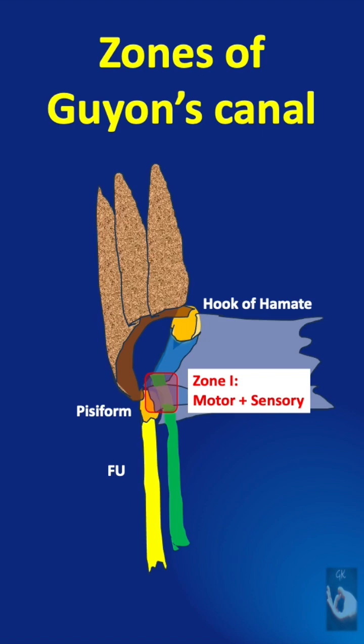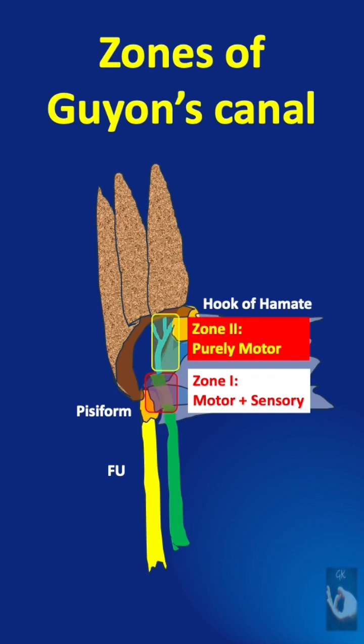Involvement at Zone 1 signifies both motor and sensory deficits in the hand. Zone 2 extends from the level of the bifurcation of the ulnar nerve to the fibrotendinous arch, which is radial and distal. Here, the deep motor branch of the ulnar nerve wraps radially around the hook of the hamate and can become compressed. Symptoms are mainly motor deficits in the hand.